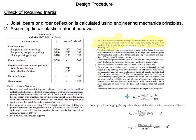There is an equation for finding the maximum deflection for uniform load: 5 times the uniform load times the span to the 4th power divided by 384EI, and we want that to equal L over 360. If we rearrange this equation, we can find the required inertia for live load and for dead plus live load.